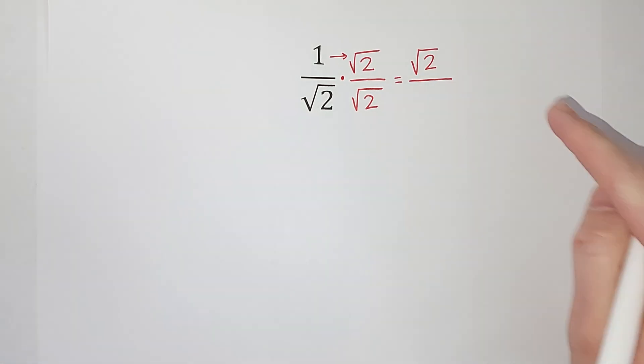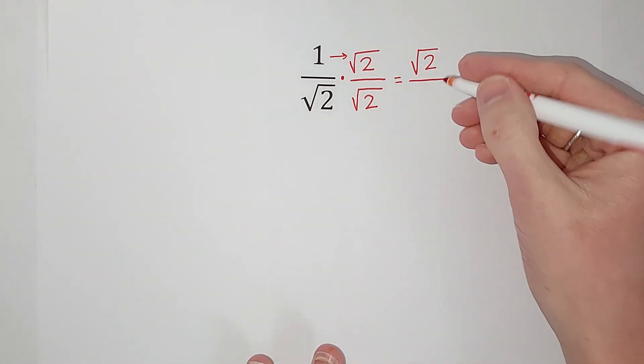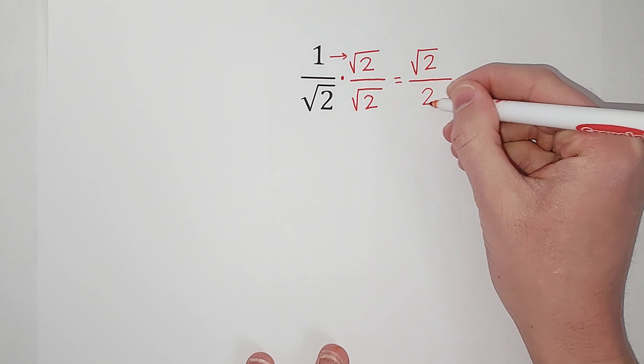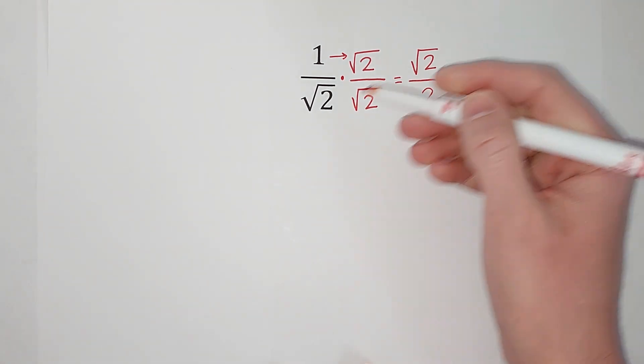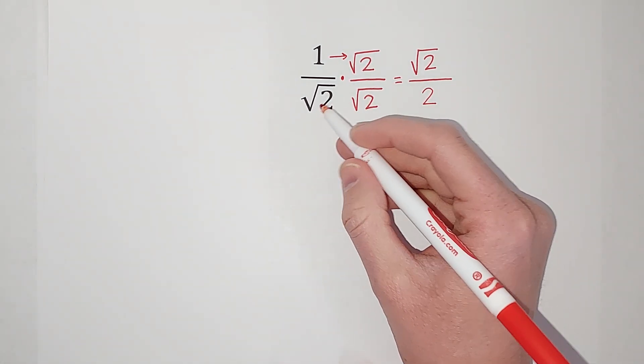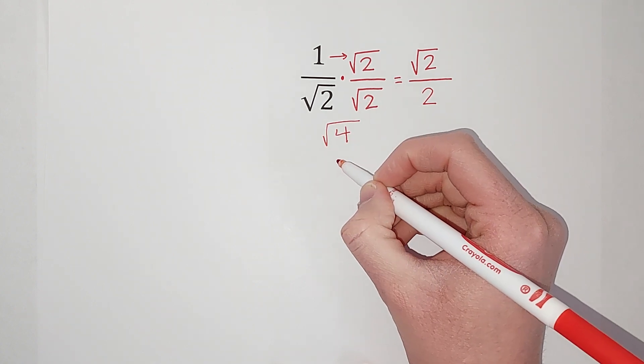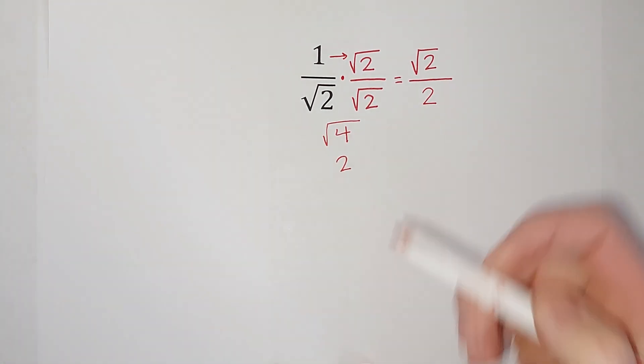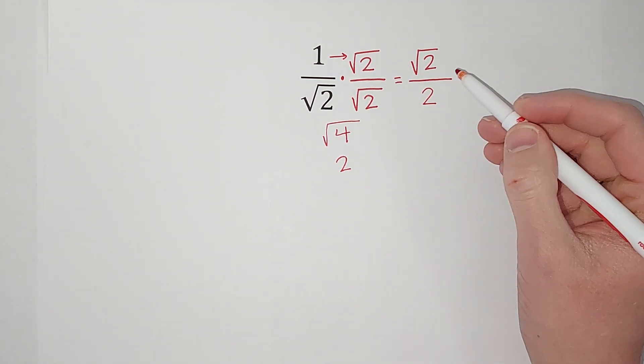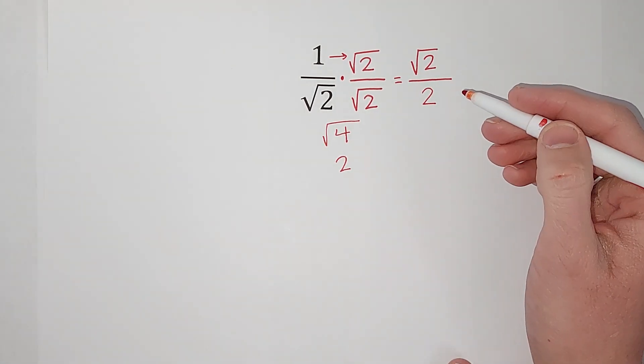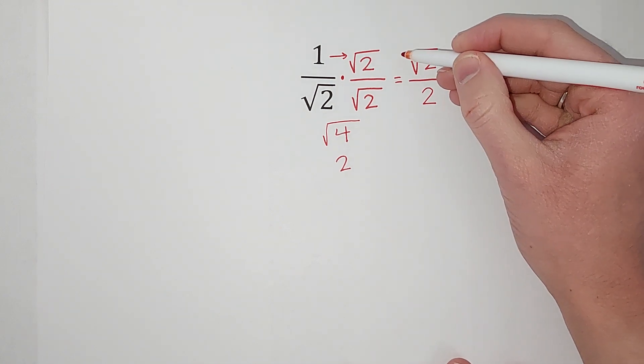When we do this, it cancels out the radicals and just leaves me with two. Why is that? Because when we multiply these, we would do two times two, which would give me four, right? And the square root of four is two. So it just cancels those out and leaves me with two. So now this is my new answer.